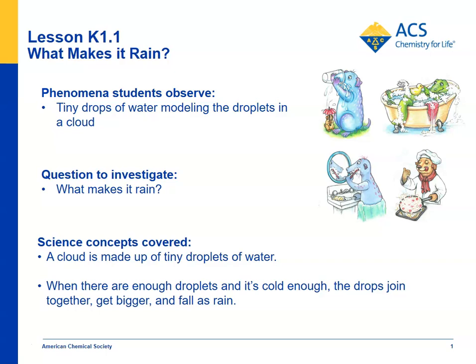In lesson 1.1, students look at a short video of kids playing on a rainy day, and they also look at pictures of cute characters using water in different ways. The idea is to have a discussion with students about where water comes from, the importance of water, and eventually get to the idea of rain. And where does rain come from? Students will make a model of a cloud and the tiny particles of water in the cloud that eventually make it rain.